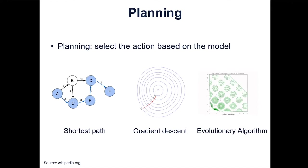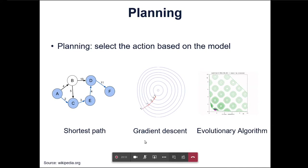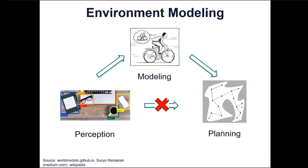The last part is to use a planning algorithm to solve the problem described by the model, assuming the model represents the environment well. Usually, the agent needs to solve an optimization problem to maximize expected reward. We can choose any algorithm — a classical graph algorithm like shortest path, continuous optimization like gradient descent, or even evolutionary algorithms for planning. The important message is that the algorithm we choose depends on how the agent models the environment. Without a suitable environment model, planning becomes impossible.